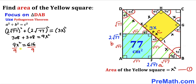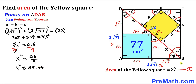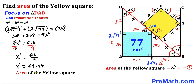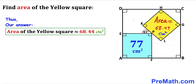Dividing both sides by 9 gives x² ≈ 68.44 centimeters square. From equation 1, the area of the yellow square is x². We have found x² here, so the area of this yellow square is approximately equal to 68.44 centimeters square. Thus the area of this yellow square turns out to be approximately 68.44 centimeters square.